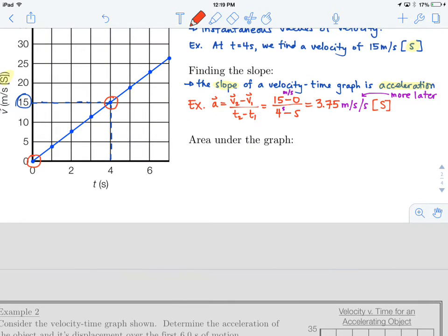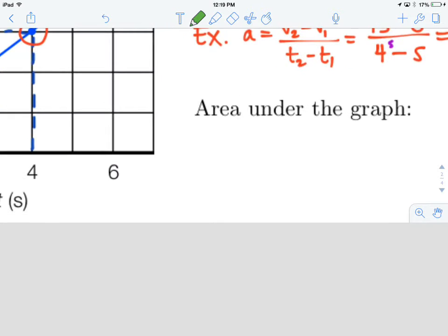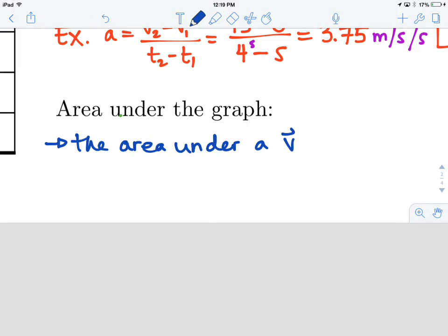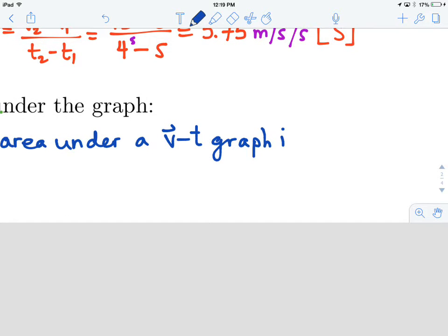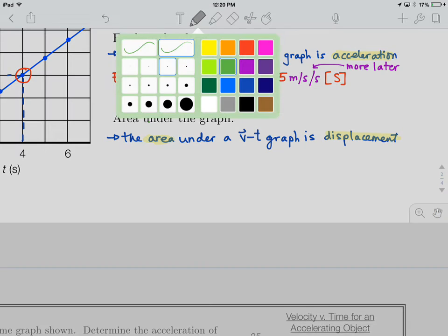Okay, so last but not least, we can also use some information, we can find some useful information from finding the area under the graph. And so here we're going to state that the area under a VT graph is displacement. Okay, so another very, very useful piece of information, the area under a VT graph is displacement.